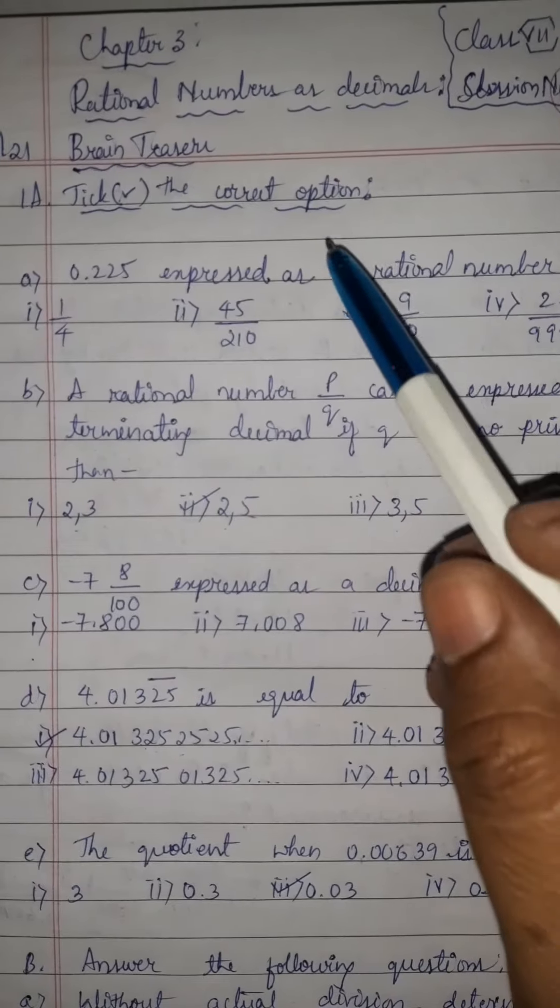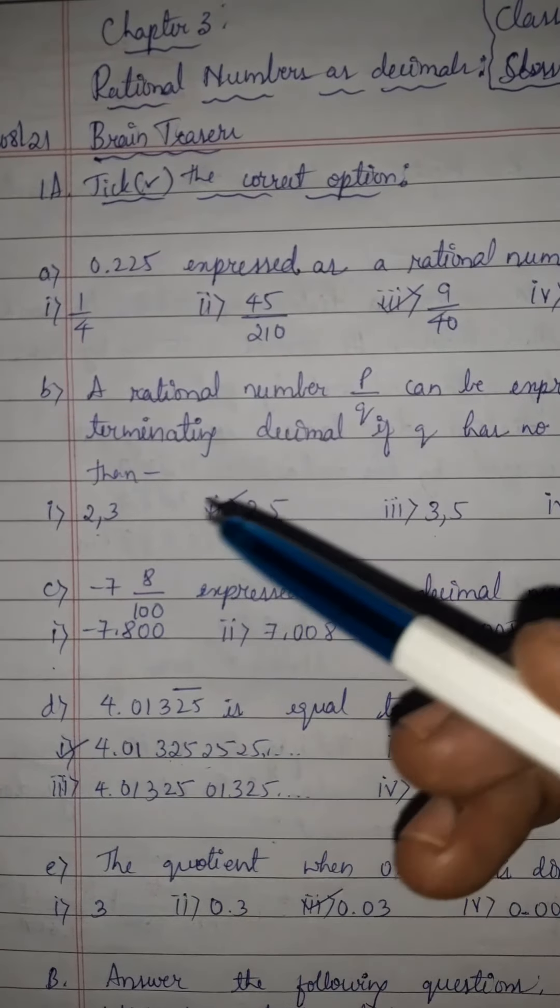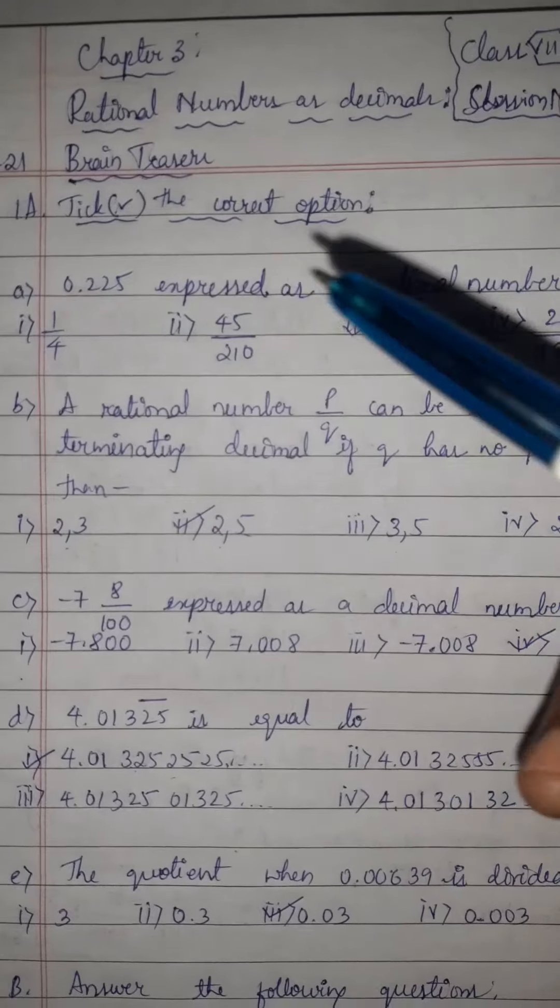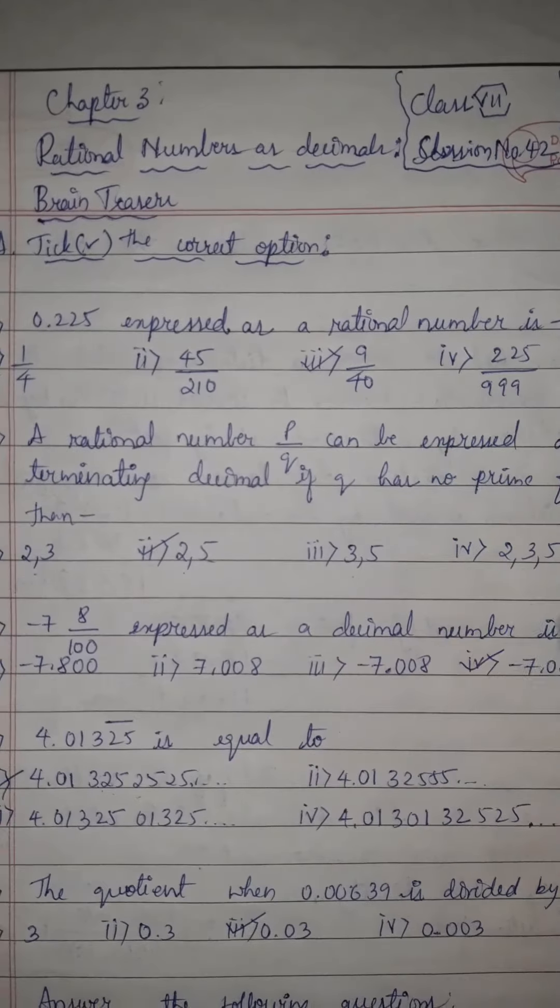Children, in this way we have finished brain teasers first main A question, B question, and second question two problems we have solved in this session. Hope you have understood well. Thank you children.